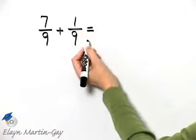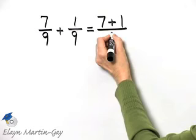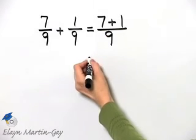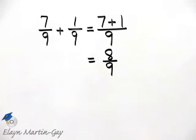So it becomes numerator 7 plus numerator 1 over a common denominator of 9. And 7 plus 1 is 8, and I still have that denominator of 9.